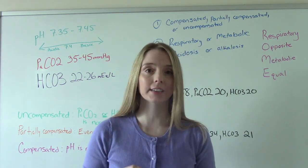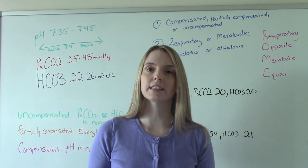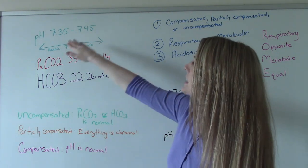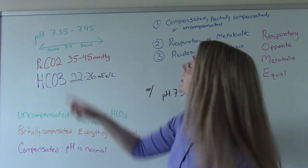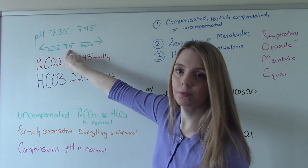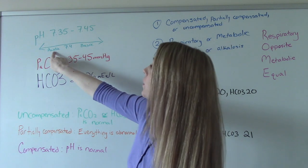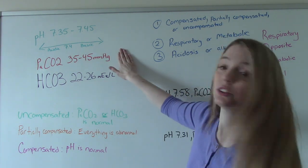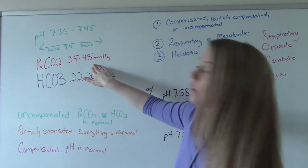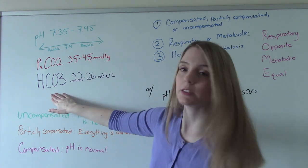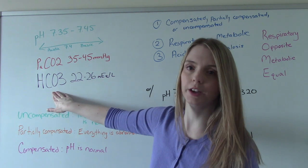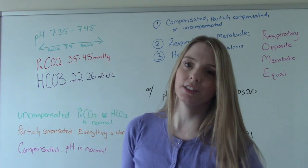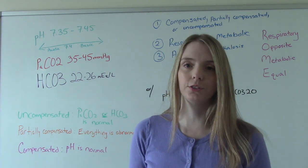Before we jump into the steps, we first have to review the lab values, because if you don't have these lab values memorized you're not going to know how to interpret the ABGs. First let's review our pH. The normal range is 7.35 to 7.45, with 7.4 in the middle as neutral. If we go lower we become more acidic, and if we go higher we become more basic or alkaline. Our CO2 is 35 to 45, and our HCO3 — sometimes called bicarb — is 22 to 26. You just have to memorize these numbers, but once you do, you'll be able to do the ABG questions.